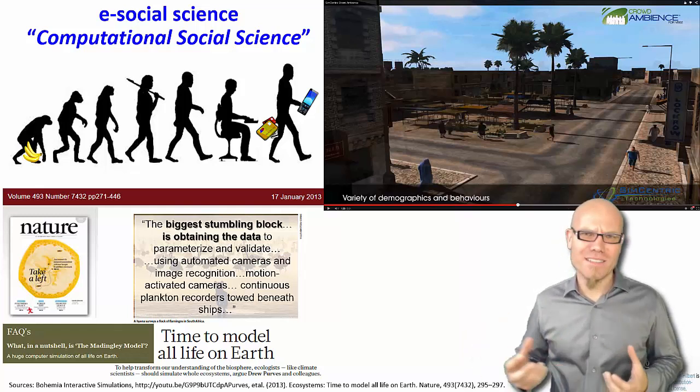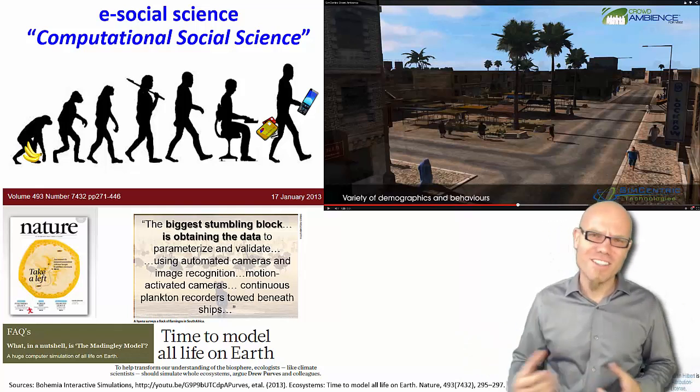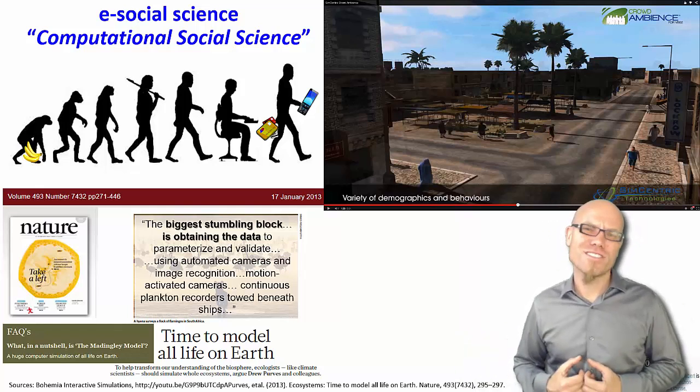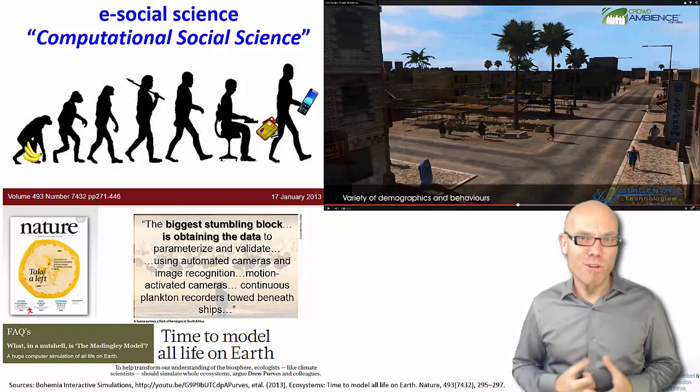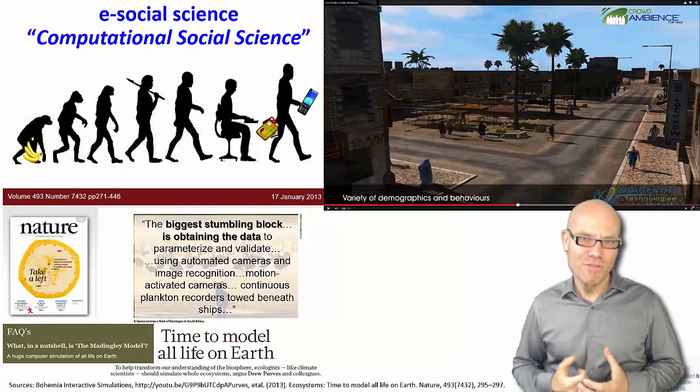That's also one of the reasons why many other scientists nowadays are drawn into the social sciences. Physicists, biologists, ecologists—they all are drawn to the social sciences and starting to exploit this digital footprint. It's a big opportunity for social sciences for the next decades to come.